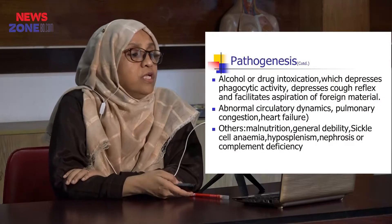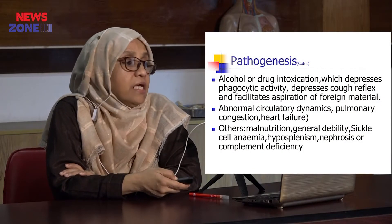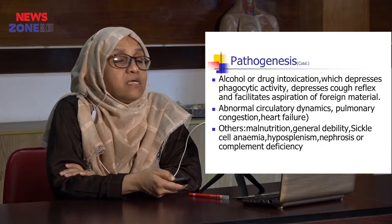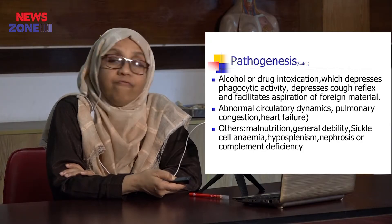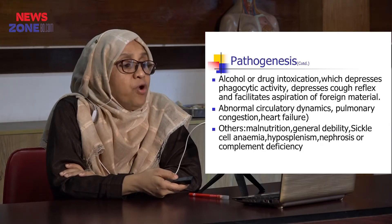Alcohol intoxication depresses phagocytic activity, depresses the cough reflex, and facilitates aspiration of foreign material. Abnormal circulatory dynamics, pulmonary congestion, and heart failure are also predisposing factors. Other conditions include malnutrition, general debility, sickle cell anemia, hyposplenism, nephrosis, complement deficiency, and extreme age.